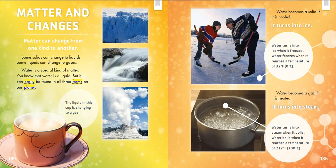Matter and changes. Matter can change from one kind to another. Some solids can change to liquids; some liquids can change to gases. Water is a special kind of matter — it can easily be found in all three forms on our planet. Water becomes a solid if it is cooled; it turns into ice. Water turns into ice when it freezes, at a temperature of 32 degrees Fahrenheit, or 0 degrees Celsius.